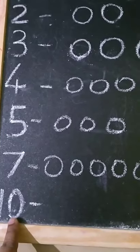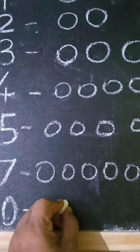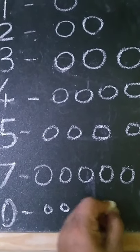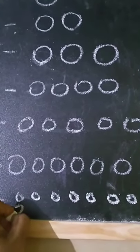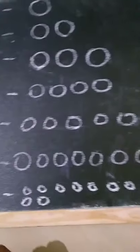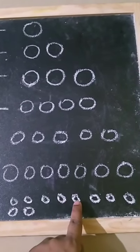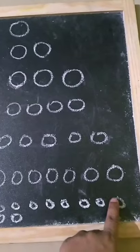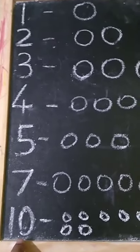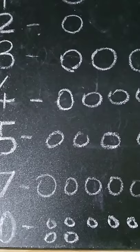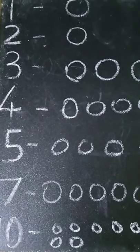Now this is number 10. So we have to draw 10 circles. 1, 2, 3, 4, 5, 6, 7, 8, 9 and 10. Let's count: 1, 2, 3, 4, 5, 6, 7, 8, 9 and 10. So we have 10 circles. And this is number 10. So children, revise the numbers and count the circles. Thank you children.